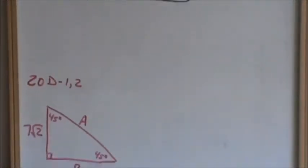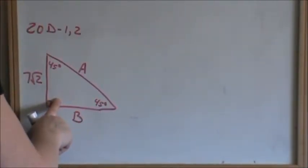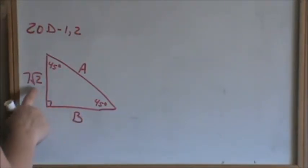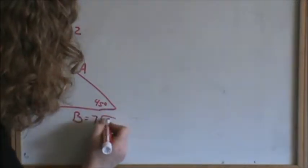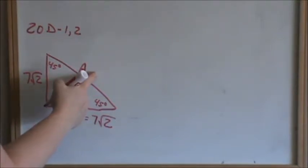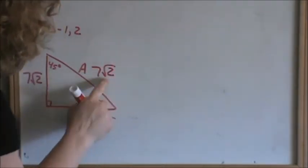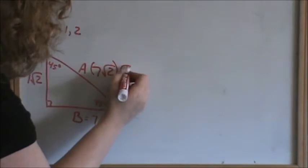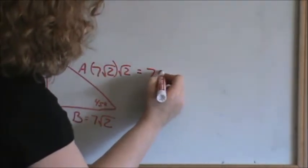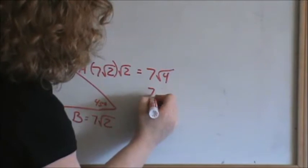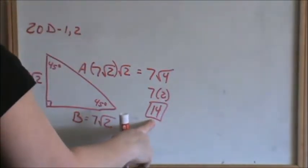Now going on down to 20D, 1 and 2. They tell us it's a 45-45-90 triangle, so therefore it's an isosceles triangle and we know the legs are going to be the same. So if this leg is 7 times square root of 2, then we know that B is also 7 times square root of 2. By the triangle rule shown above, the hypotenuse will always be the leg times square root of 2. So we multiply 7 square root of 2 by square root of 2 — numbers to numbers, radicals to radicals — that would be 7 times square root of 4. Square root of 4 is 2, and 7 times 2 is 14. So the hypotenuse is 14.